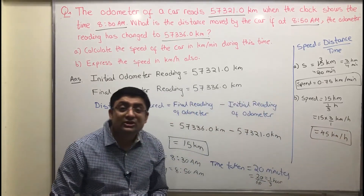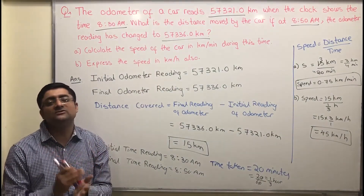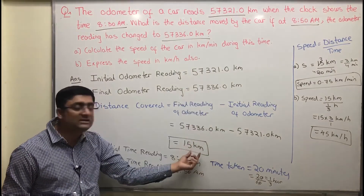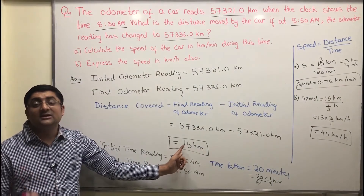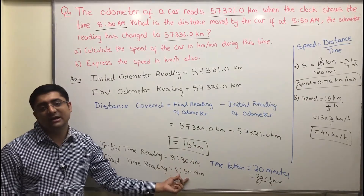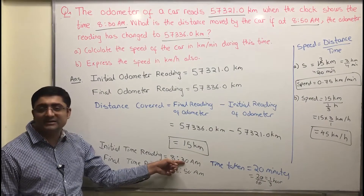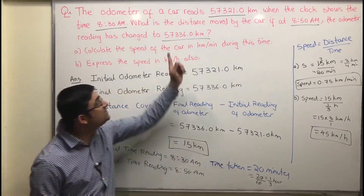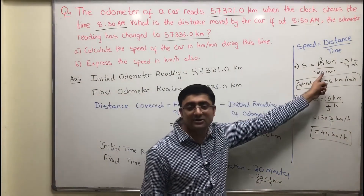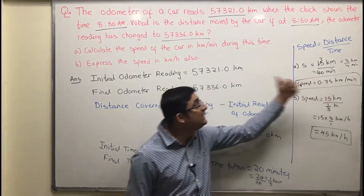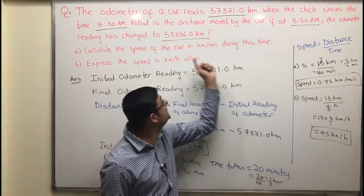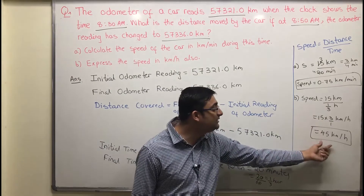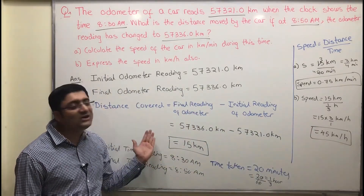To summarize: the odometer tells the total distance traveled by the car, so distance covered equals final reading minus initial reading, giving 15 km. Time taken is 8:50 AM minus 8:30 AM, which is 20 minutes. Speed equals distance divided by time. For km per minute, we got 0.75 km/min. For km per hour, we converted 20 minutes to one-third of an hour and got 45 km/h.